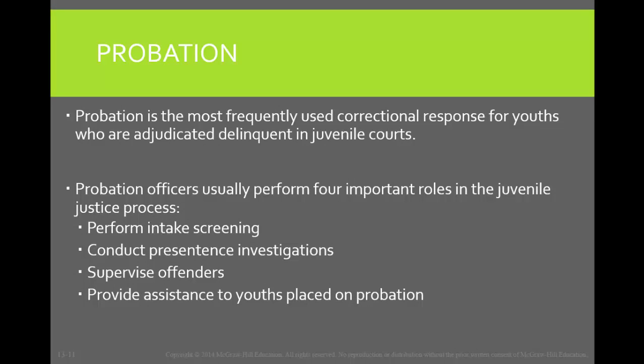Juvenile probation is by far the most popular sentence that these minors can receive. It is almost a compromise sentence for those juveniles who have not really committed a very serious offense and are not yet considered chronic offenders. It allows the juvenile to be supervised in the community and avoids the harshness that institutionalization provides. There are juvenile probation officers who supervise these young offenders. There are still probation conditions present, but they are adapted to the needs of the juvenile — instead of maintaining a job, juveniles are required to attend school and not skip school, for instance.